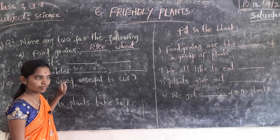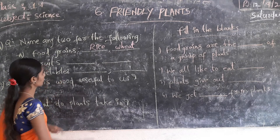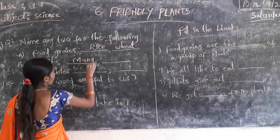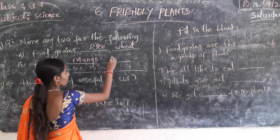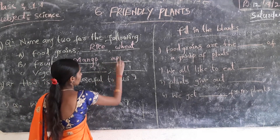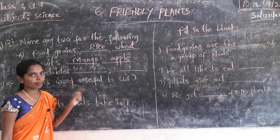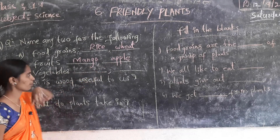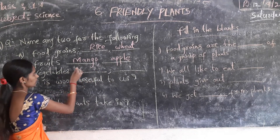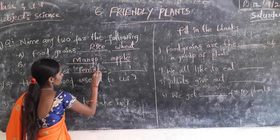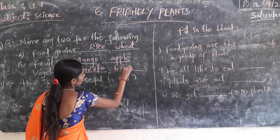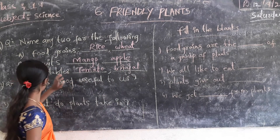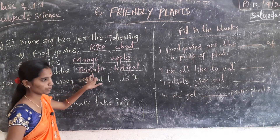Next — fruits. Examples of fruits: mango, apple, banana, pineapple, watermelon. Write any two examples — apple and mango. Next — vegetables. Examples: tomato, brinjal, cabbage, cauliflower, carrot. Write any two — tomato and brinjal.